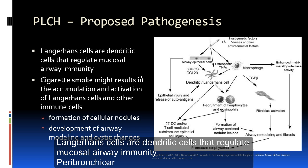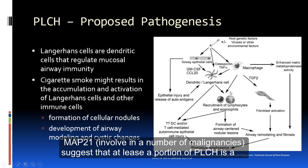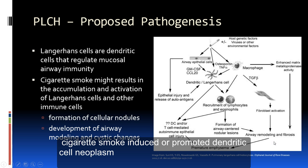PLCH has an equal gender distribution and the duration of illness is usually less than one year prior to diagnosis. The proposed pathogenesis involves cigarette smoking or environmental factors activating Langerhans cells — dendritic antigen-presenting cells — which recruit cytokines, lymphocytes, eosinophils, and macrophages. This causes T-cell–mediated autoimmune cell injury, forming airway-centered nodular lesions, fibroblast proliferations, and eventually airway remodeling, fibrosis, and premature emphysema.